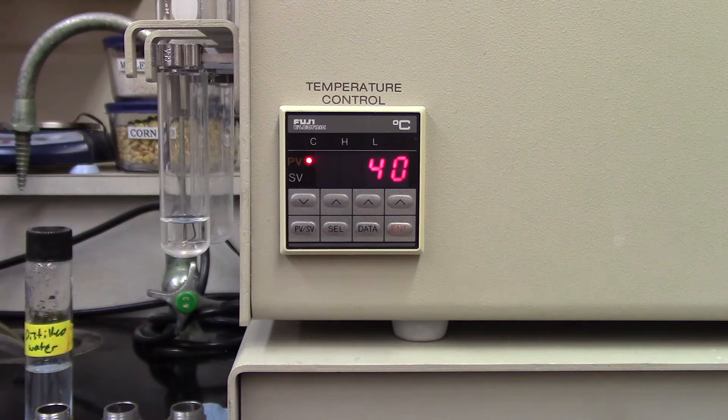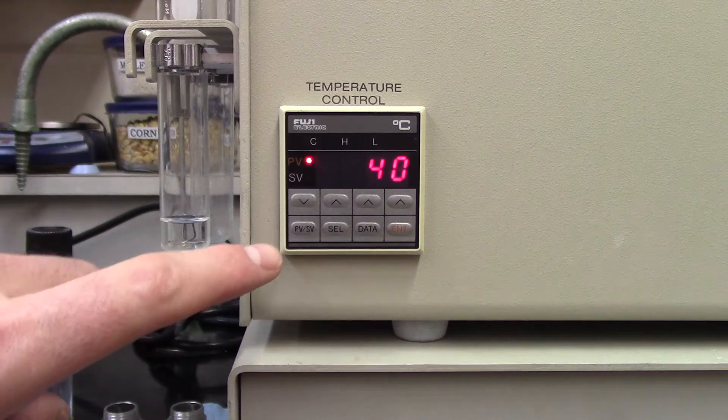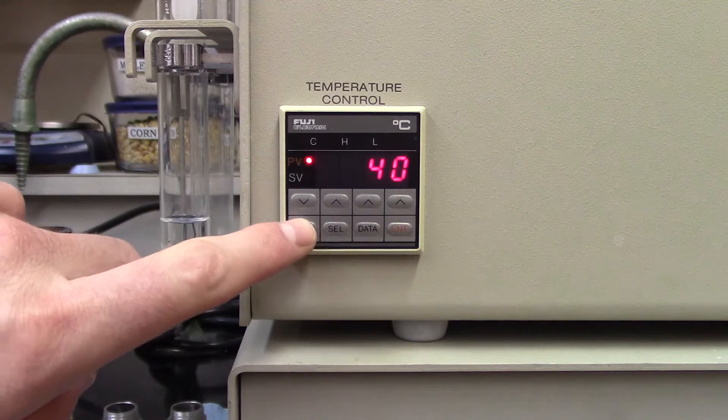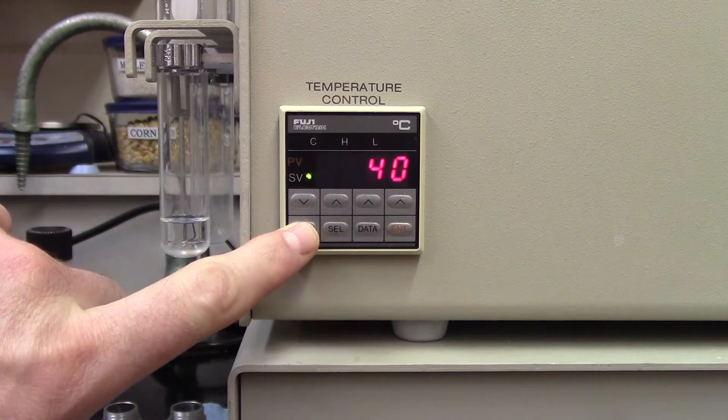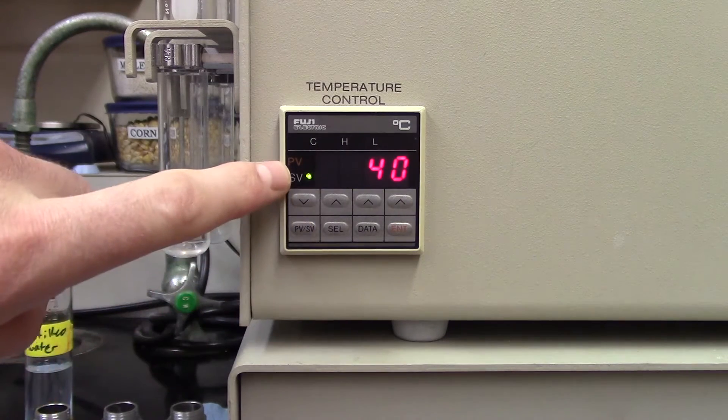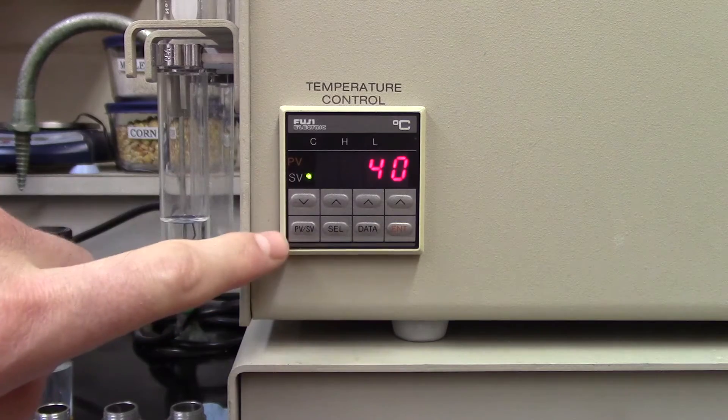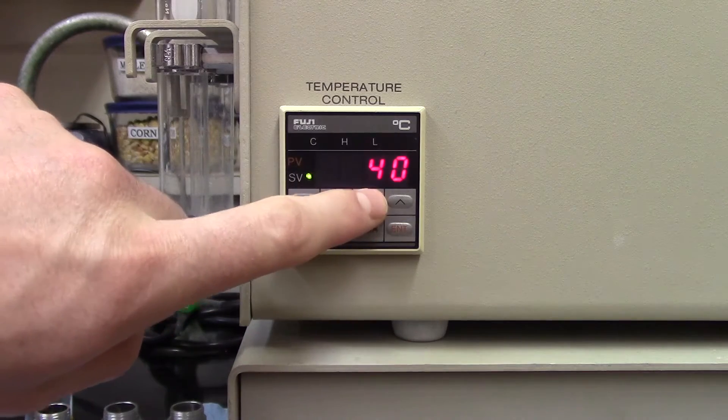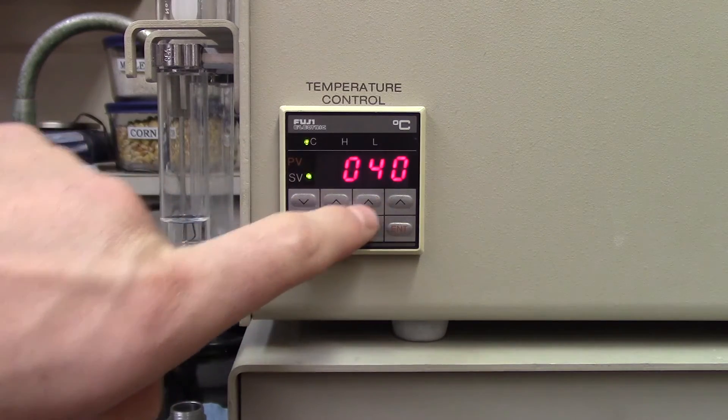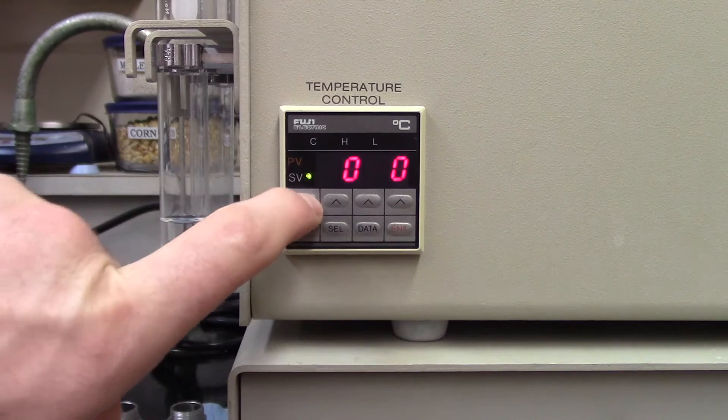The temperature can be adjusted by the panel on the front of the extraction chamber. Start by pressing the PV-SV button, which stands for present value, set value, so the green light is displayed next to the SV. You can now adjust the temperature by selecting the digit you wish to change and using the up-down arrows.